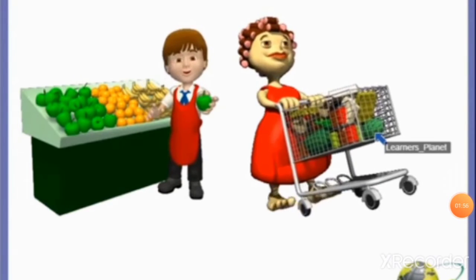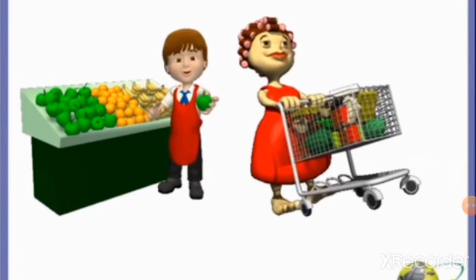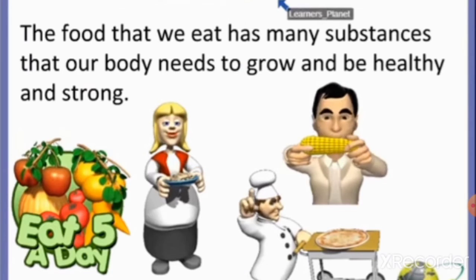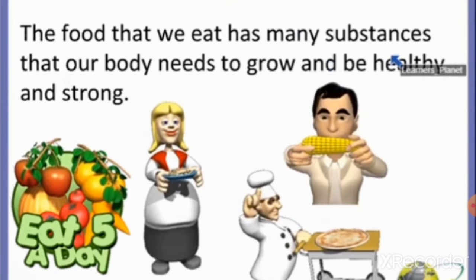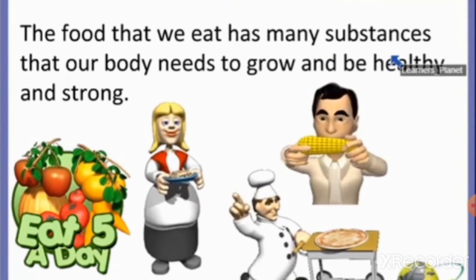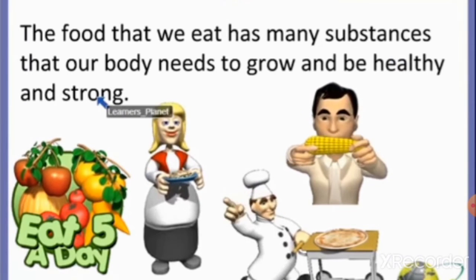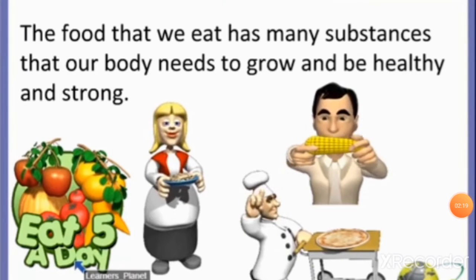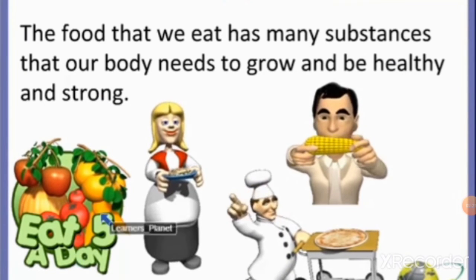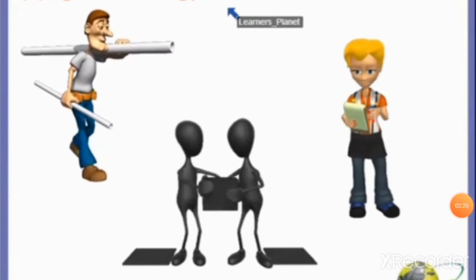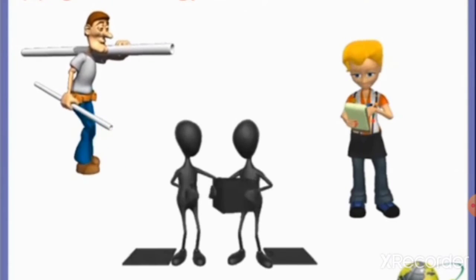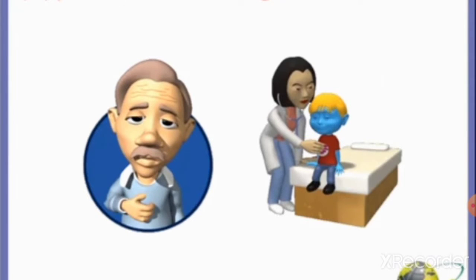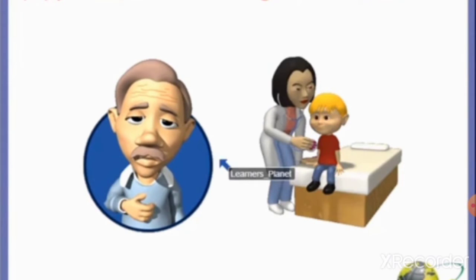The food that we eat has many substances that help our body to grow and stay healthy and strong. The substances needed by our body for energy, good health, and proper growth are called nutrients. Nutrients give us energy to do our work. External functions supported by energy include exercise, work and play. If you are active and doing a lot of physical work, you need nutrients, which also help prevent us from falling ill too often.